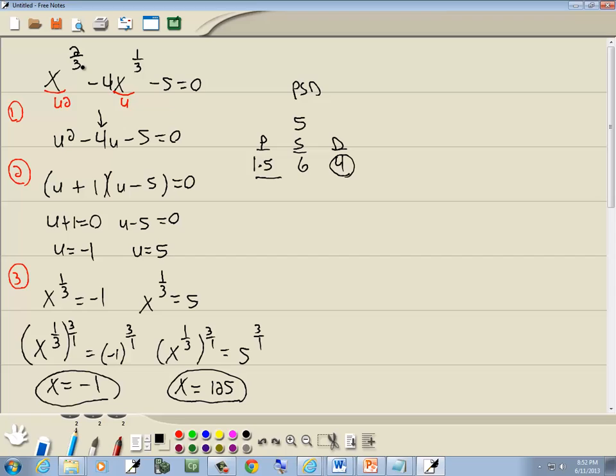125 to the 2 thirds will be 5 squared, which is 25. This 125 to the 1 third would be 5 times 4 is 20. So 25 minus 20 is 5. 5 minus 5 is 0. So both of them check.